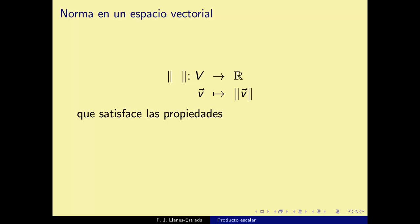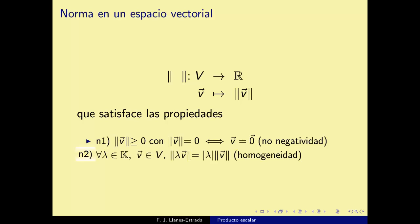Para que una función sea una norma debe satisfacer: primero, no negatividad: ‖v‖ ≥ 0, y ‖v‖=0 implica v=0; segundo, homogeneidad: ‖λv‖ = |λ|·‖v‖ para todo escalar λ y vector v (si multiplico las coordenadas por −5, la norma queda multiplicada por 5, ignorando el signo); tercero, la desigualdad triangular: ‖x+y‖ ≤ ‖x‖ + ‖y‖ para todo par de vectores.